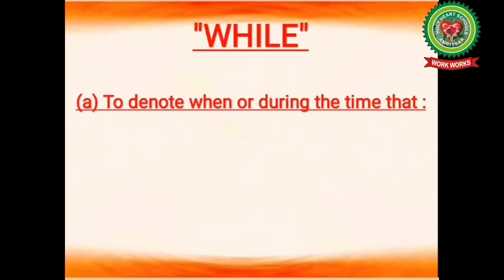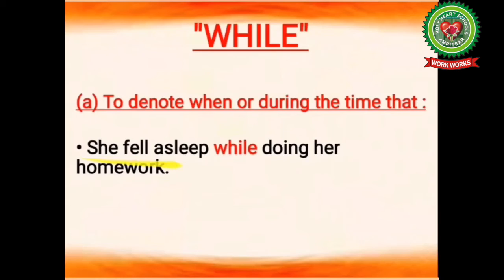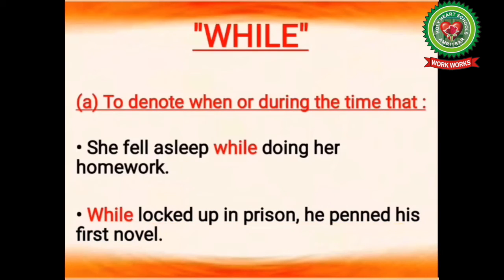The next conjunction is 'while'. While means a period or interval of time when, short or marked by occurrence of an action or condition. Example: she fell asleep while doing her work — meaning she fell asleep when she was doing her homework. Another example: while locked up in prison, he penned his first novel — meaning when he was locked up in prison, he wrote his first novel.